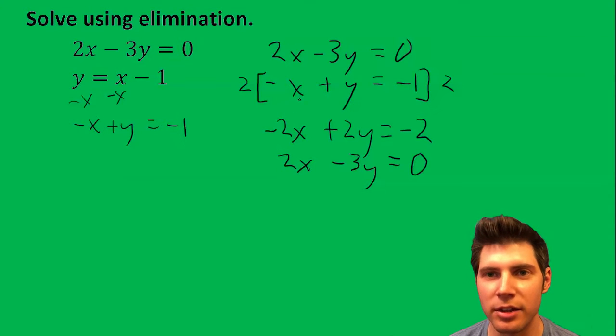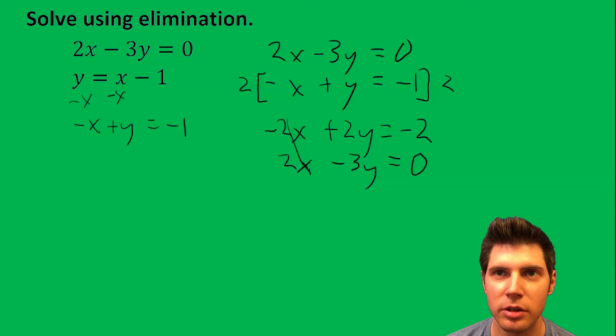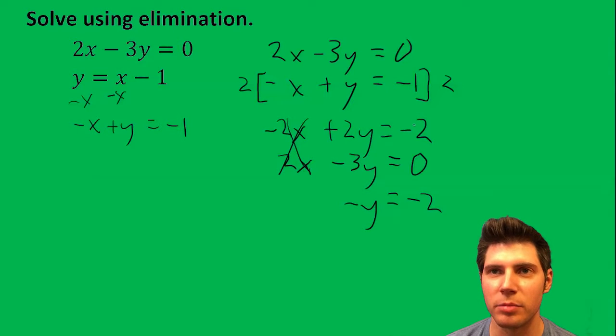Now in elimination, I add the two rows together. So it's going to be negative 2x plus 2x, which is 0. Those cancel. This becomes negative y and this becomes negative 2 because I'm adding them together.